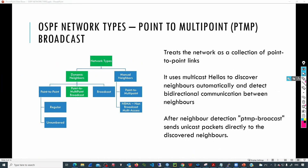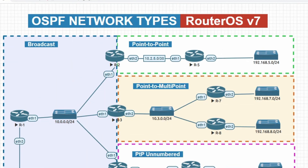This network type is going to treat the network as a collection of point-to-point links. In this topology, R3 is connected to a switch, and then we have R7 and R8. We're going to set the type to point-to-multipoint.